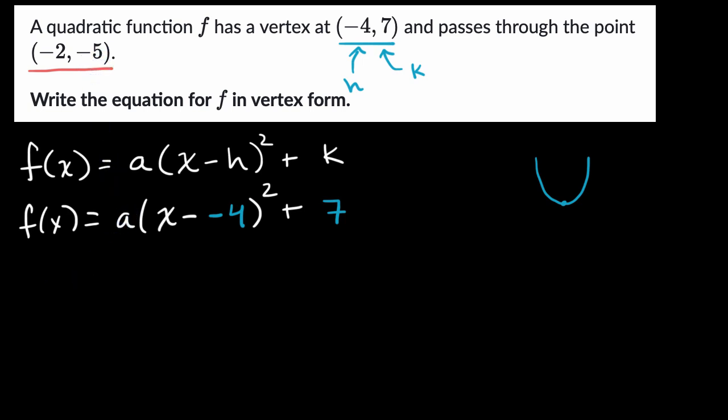So let me write this here. So we could say f of negative two, which we know is equal to negative five, but it's also going to be equal to all of this where I replace x with a negative two. So it's going to be equal to a times negative two right over there. And then we have this subtracting a negative four, so that's just adding a four, squared, and then we have plus seven.